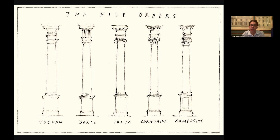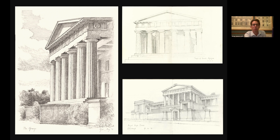It's also worth noting that the orders are presented without any specific scale or material. We will look at each of the orders in turn using some drawings from my sketchbooks. I have been recording buildings in sketchbooks for about 25 years now, and I never cease to be amazed by the extraordinary variety that exists within classical buildings — in different parts of the world, built at different times and with different materials, but all based on the simple idea of these five orders.